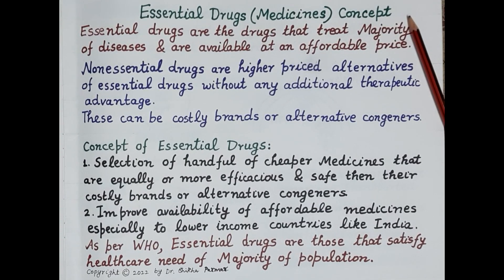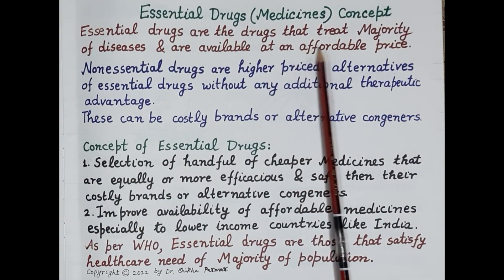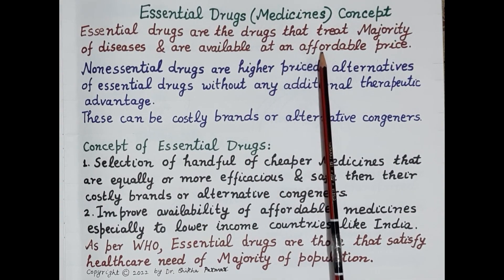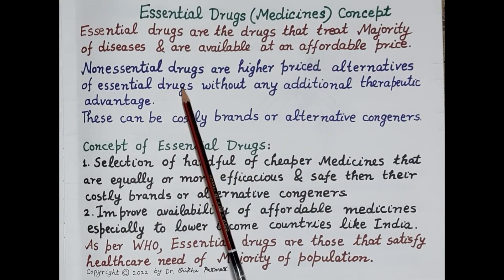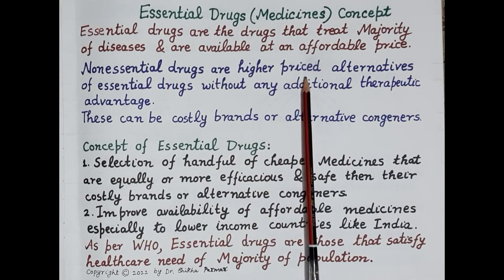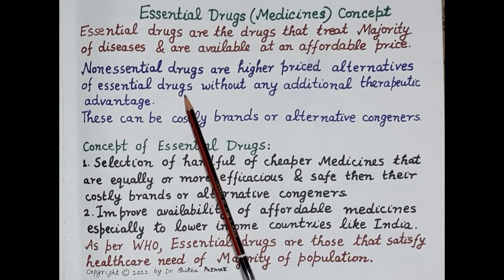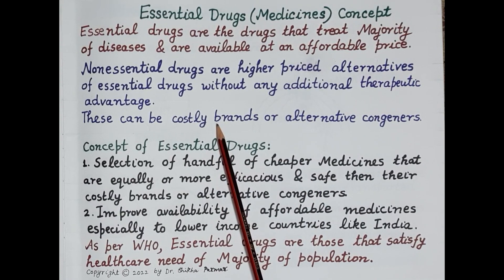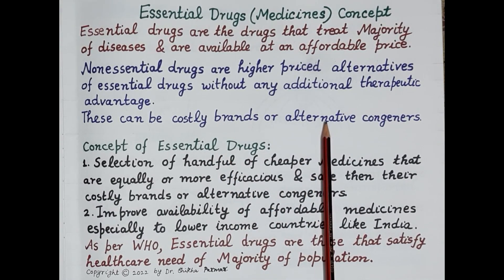Of these thousands of drugs, around 30 percent are essential drugs and 70 percent are non-essential drugs. Essential drugs are the drugs that treat the majority of diseases and are available at an affordable price, whereas non-essential drugs are the higher-priced alternatives of the essential drugs without any additional therapeutic advantage. These non-essential drugs include costly brands and alternatives like costly congeners or drugs of the same category.